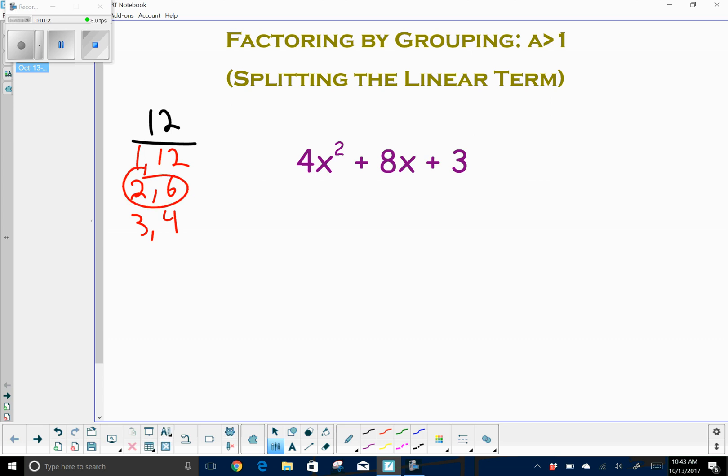I'm going to start rewriting this trinomial: 4x squared plus 2x from this 2 plus 6x from this 6 plus 3. Notice, all I did was rewrite 8x as a sum of 2x and 6x.